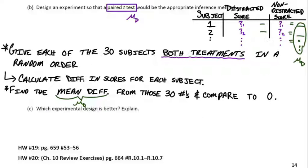How close is it to 0? Because if our mean difference is really close to 0, that could mean that there's really no difference between the distracted score and the non-distracted score for this test.